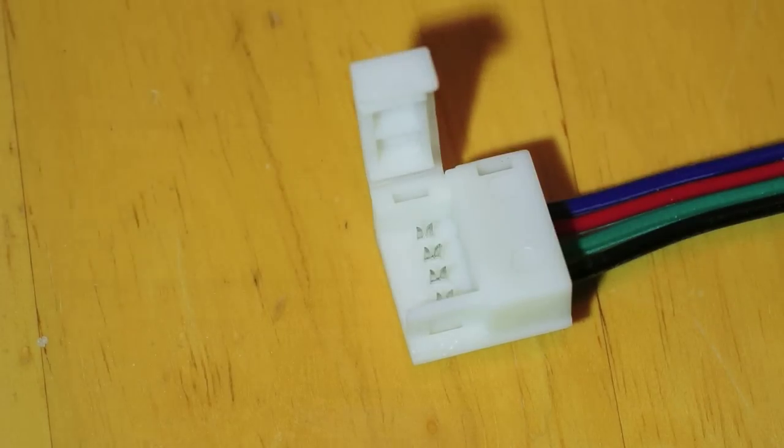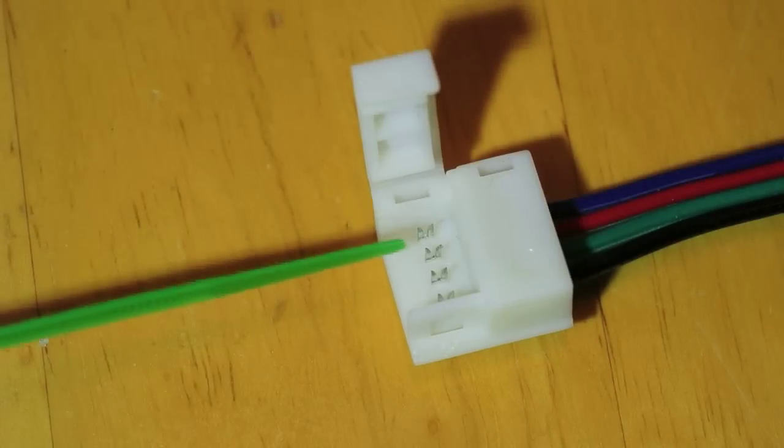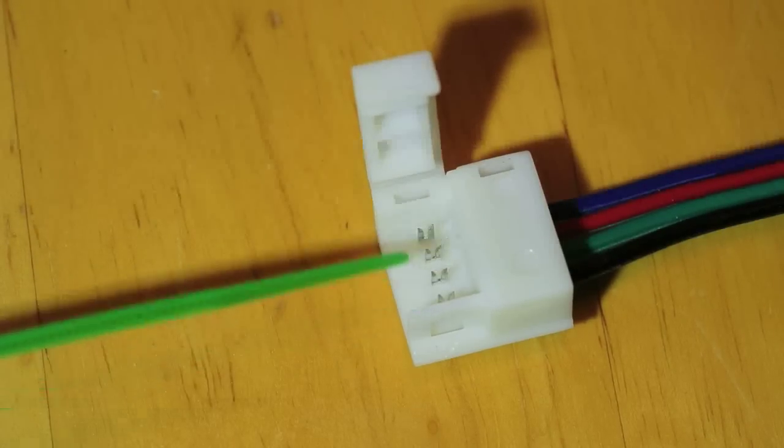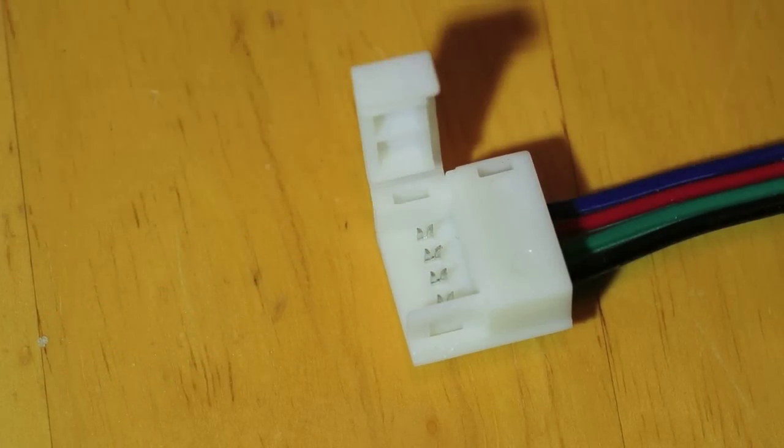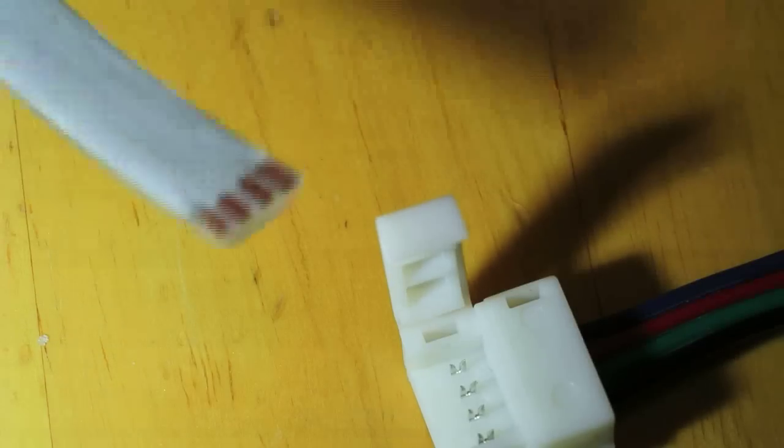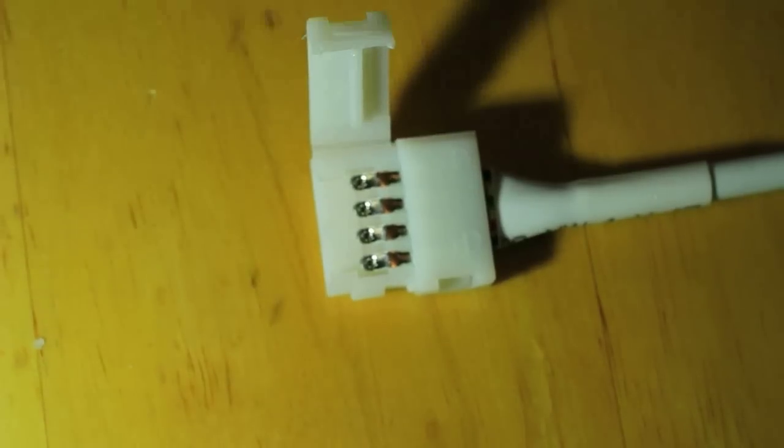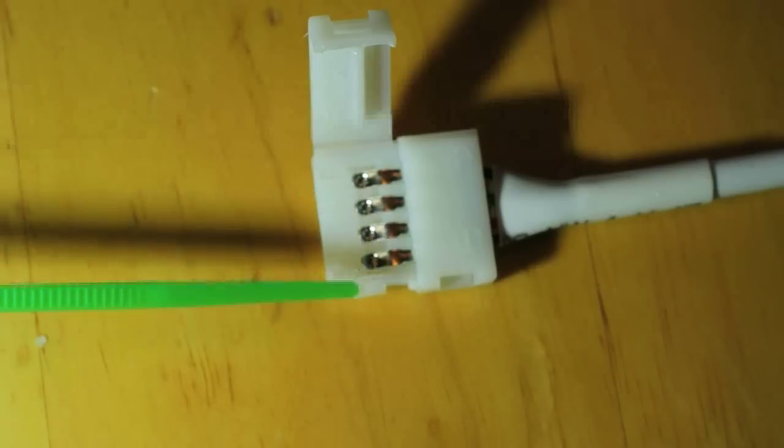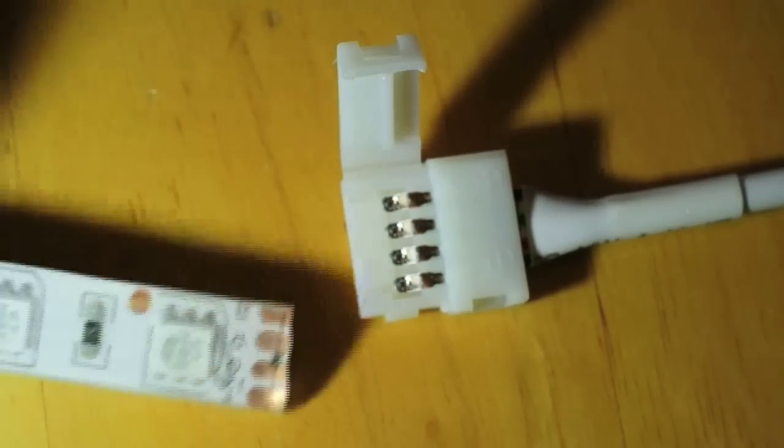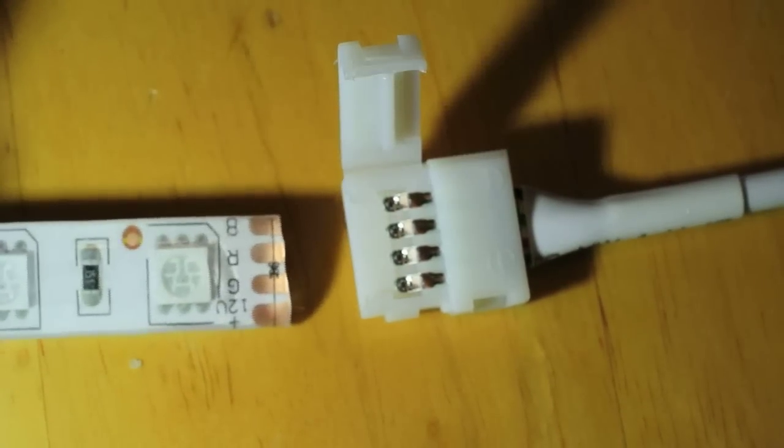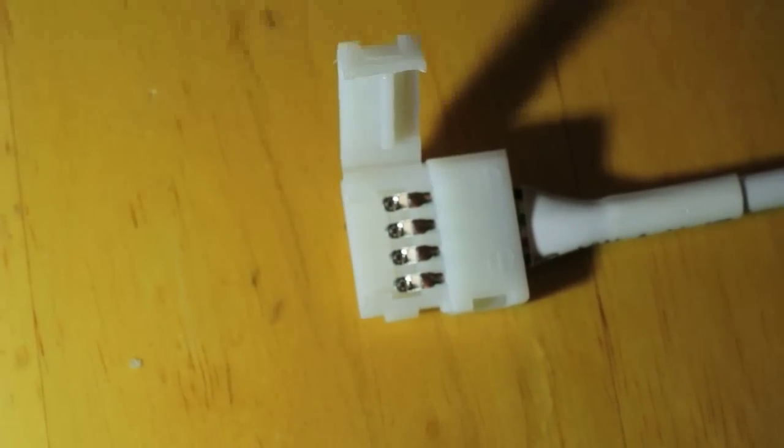And this is an example of an insulation displacement connector. And you can maybe see there's prongs right here. That actually what they do is they pierce the bottom of the strip from the underside. And this is an example of a non-waterproof connector. And with this they're actually little fingers that stick out. The way these work is the LED strip actually slides underneath those four little contacts.